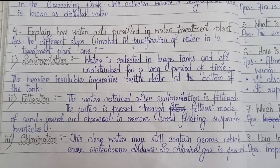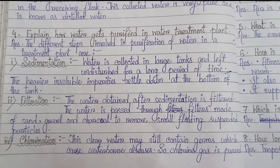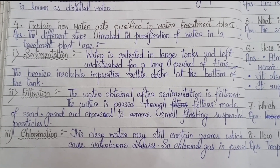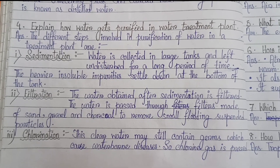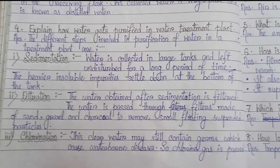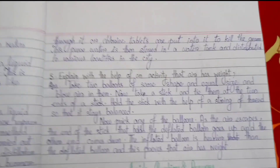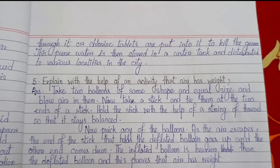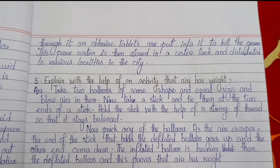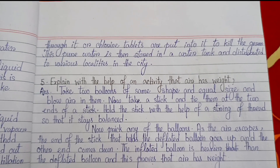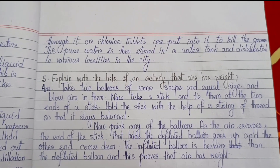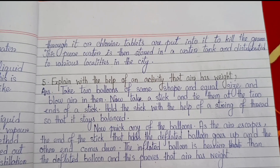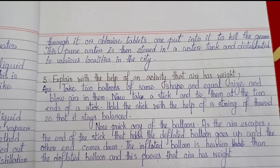3. Chlorination — this clear water may still contain germs which cause waterborne diseases, so chlorine gas is passed through it, or chlorine tablets are put into it to kill the germs. This pure water is then stored in a water tank and distributed to various localities in the city.